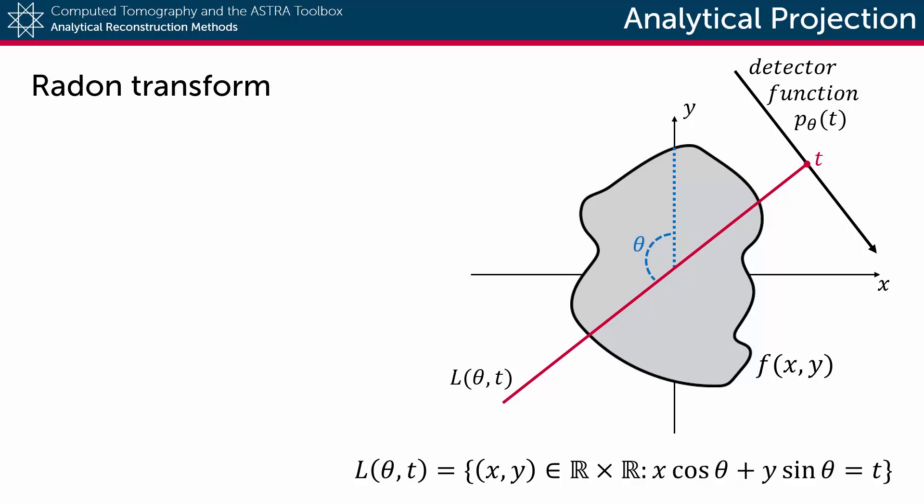Now at this point we have all that we need to define the measured linear projection data of the function f under the angle θ and detector position t. This is, of course, the integral of f along the line L.